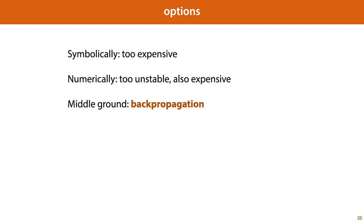Backpropagation is a middle ground. It does part of the work symbolically and part of the work numerically. We get a very accurate computation of the gradient, and the cost of computation is usually only twice as expensive as computing the output for one input.